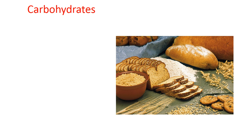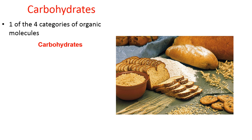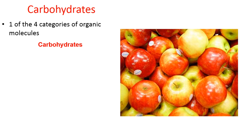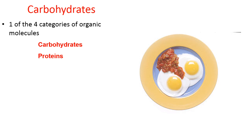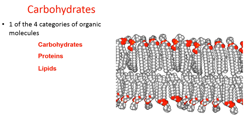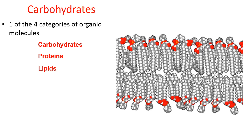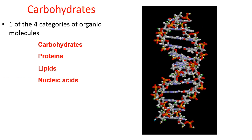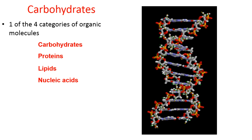When it comes to carbohydrates, they are one of the four categories of organic molecules. Carbohydrates are high in certain foods such as breads, pastas, and fruits. The other categories of organic molecules include proteins — eggs are high in protein — and lipids, such as the phospholipid bilayer that surrounds every cell. And nucleic acids, such as DNA. Organic molecules are molecules built around carbon.